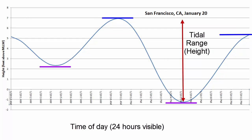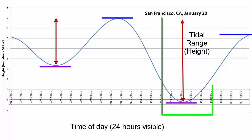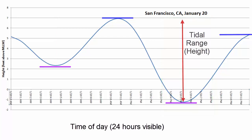The tidal range is calculated by taking the vertical distance between the crest and the trough. When crest or trough height varies, calculate tidal range as the maximum vertical distance from the highest crest to the lowest trough.